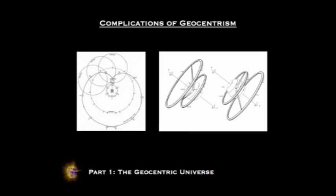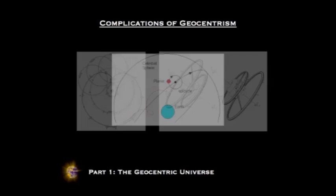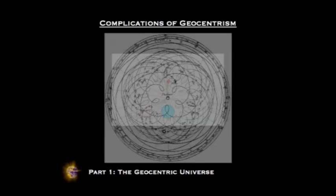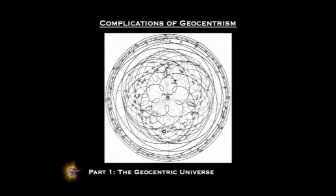But still, this was not enough to accurately predict the motion of the planets, and so more adjustments were made to account for variation in the retrograde loops. The model became increasingly complicated, with equations and complex geometric spirals. Despite its flaws, the geocentric model would remain dominant for over 1,500 years, and it wasn't until the scientific revolution — the likes of Galileo, Copernicus, and Kepler — that it was called into question.